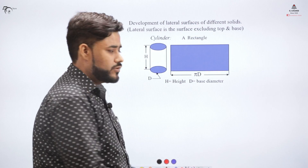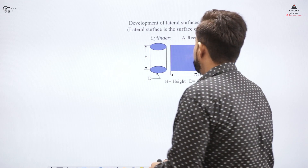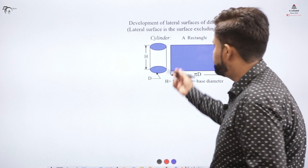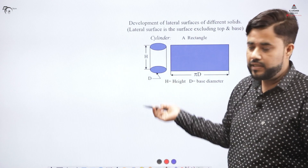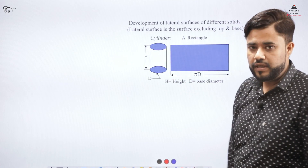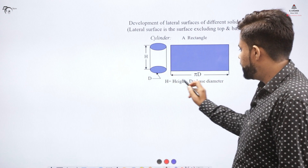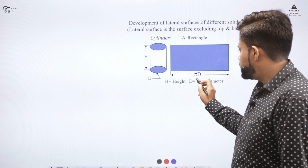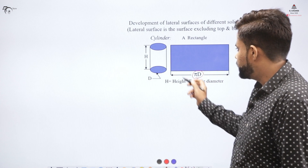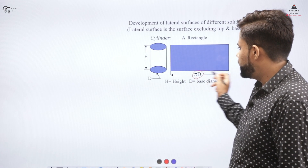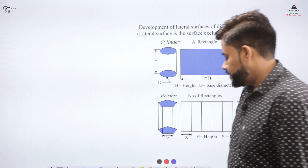Let's clarify some key concepts. For a cylinder, when you unfold it you get the circumference of the base, which is π·d, as one dimension, and a rectangle as the development of the surface.